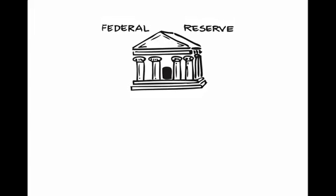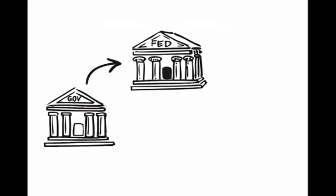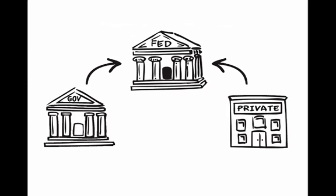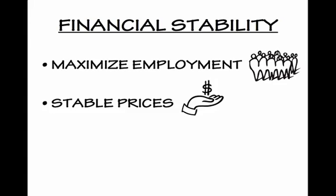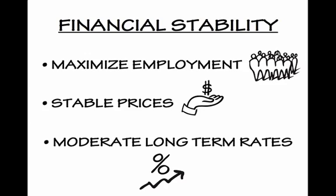The Federal Reserve, or the Fed, is a part government, part private institution that controls the monetary policy needed to maintain a stable financial system in the U.S. The Fed wants to maximize employment, ensure stable prices so that they don't double or triple from one day to the next, and moderate long-term rates so that they don't increase or decrease abruptly.